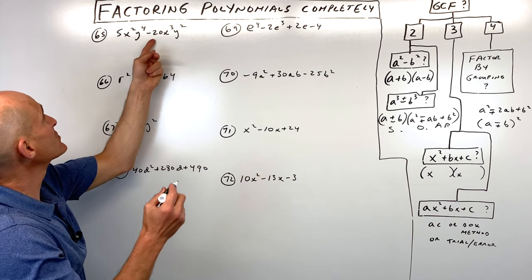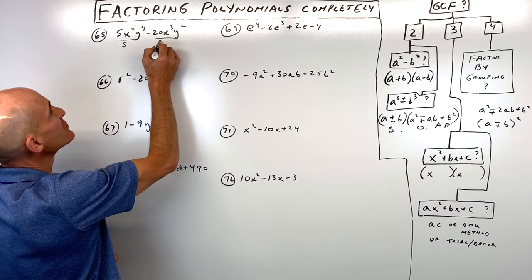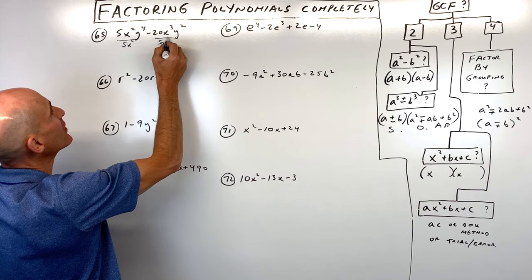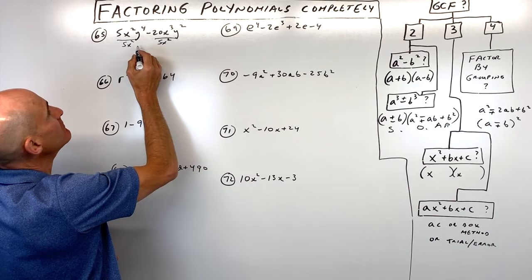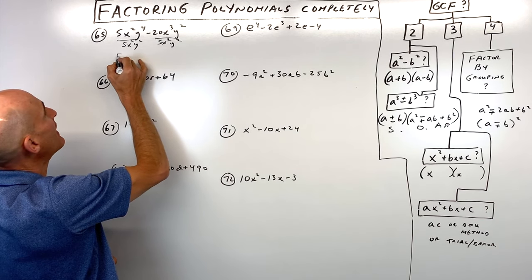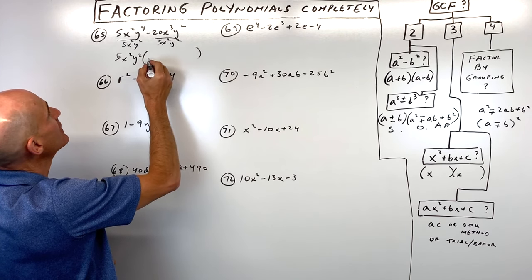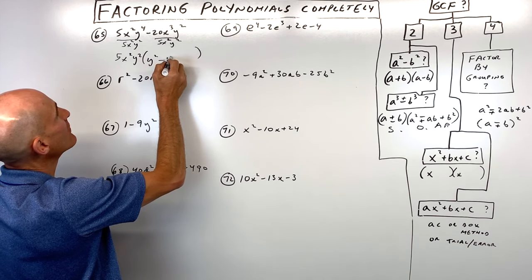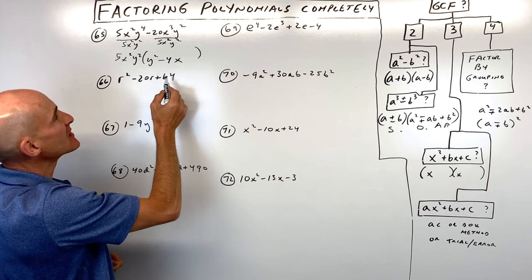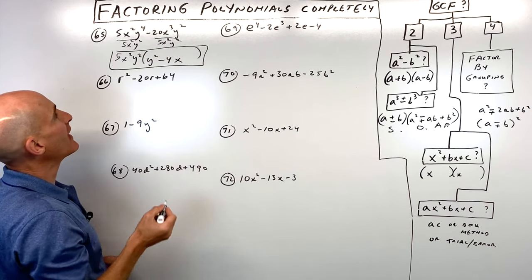Number sixty-five: both terms are divisible by 5, and they both have at least x squared and at least y squared in common. Factor out 5x squared y squared to get 5x squared y squared times y squared minus 4x. This can't be factored further — it's just the greatest common factor.